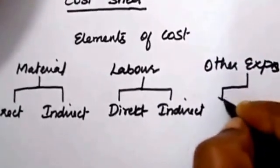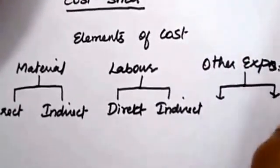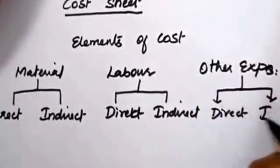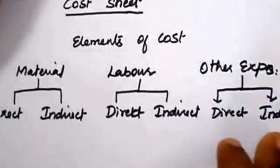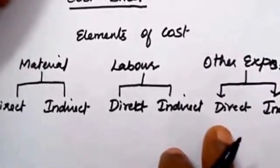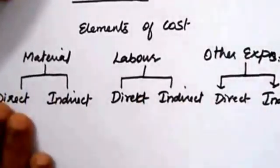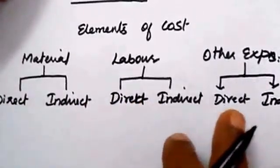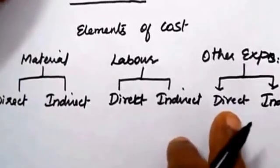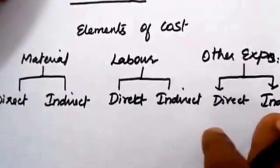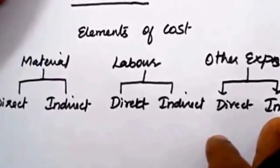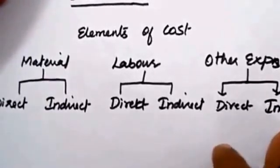Other expenses are also classified into two categories: direct other expense and indirect other expenses. Direct expense means any expenses directly involving in the production process, apart from material and labor. Indirect other expense is an expense which is not directly involving in the production process.